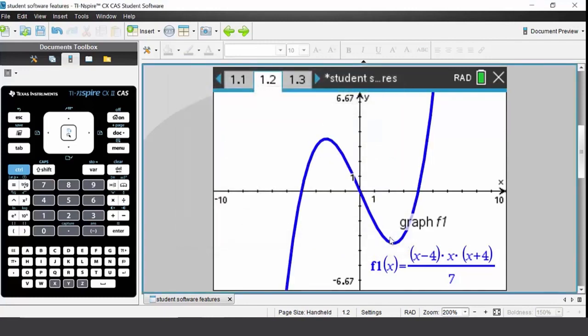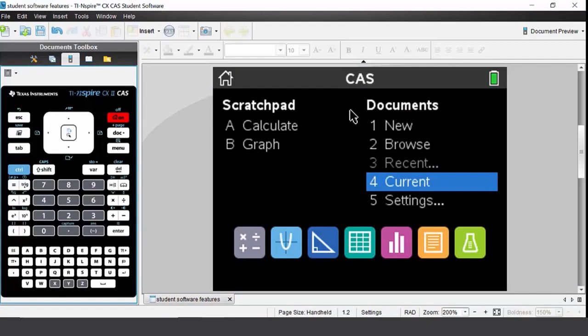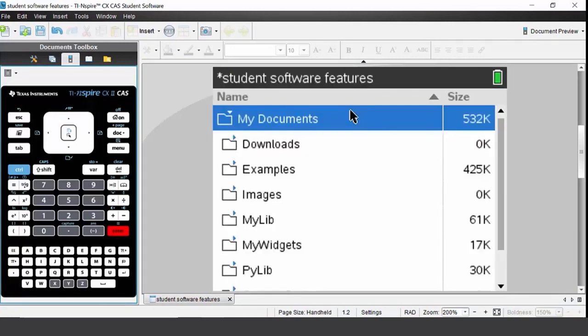The next thing you may want to do is create and delete folders directly on your handheld. On your handheld press the home key. Under the documents side of your screen, come down to option 2 which is browse. This lets you browse the folders on your handheld.